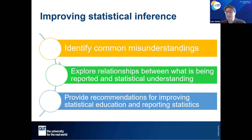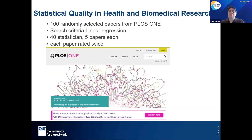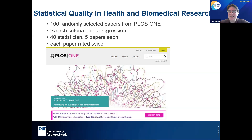The first part of my PhD involves reviewing 100 randomly selected papers from PLOS ONE in the health field, focused on linear regression. Linear regression is an important concept that goes right through the statistical area. I've just finished recruiting 40 statisticians to review these papers after 12 months, so today I'll give a qualitative overview rather than full results.